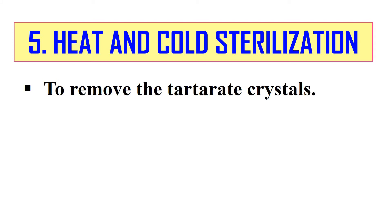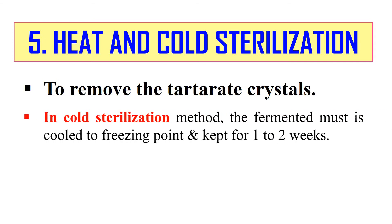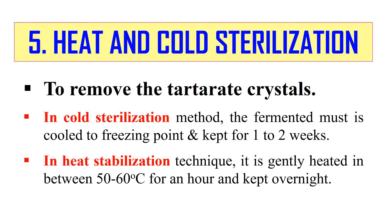The next step is heat and cold sterilization. The main aim is to remove tartrate crystals, also known as white diamonds or white crystals. In cold sterilization, the fermented must is cooled to nearly freezing point and kept for 1–2 weeks, during which crystals separate and the clear liquid is collected into a secondary fermenter tank. In heat stabilization, it is heated to 50–60°C for about an hour and kept overnight, after which proteins are removed. This step is generally carried out after primary fermentation.